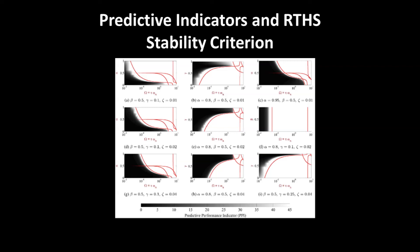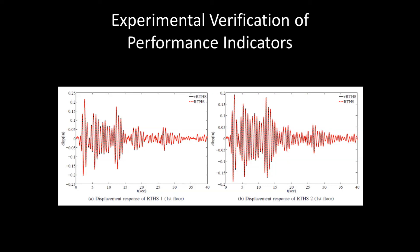Using these indicators, we can design experiments that work reliably and understand why other experiments fail. These graphs depict regions of stability bounded by curves that relate to physical parameters of the system. Using these indicators, we are able to perform RTHS experiments that were previously unstable.